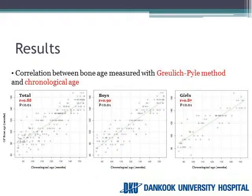This figure shows the correlation between chronological age and bone age estimated by the GP method in the whole group and each gender. As you can see, there was a linear relationship between chronological age and bone age by the GP method in each group.